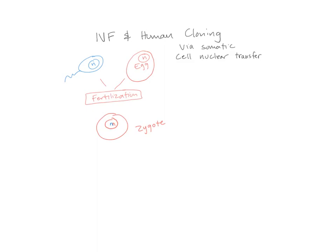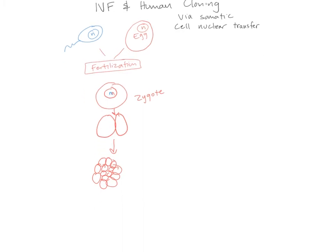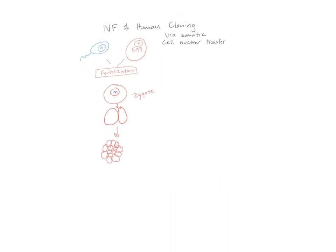From the zygote, cell division begins through a process called cleavage. The cells split repeatedly — they don't grow, so they get smaller and more numerous with each division. At some point you can take this developed zygote, which has gone through many rounds of cleavage and mitosis, and implant it into a female surrogate mother — or it may actually be her own egg to begin with. That's how in vitro fertilization and implantation works.